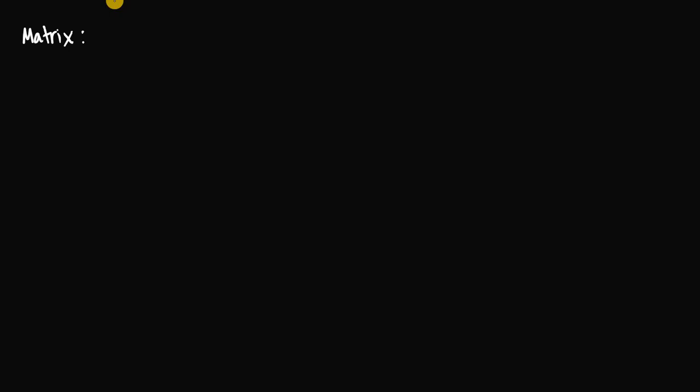Now that we've had a first look at matrices, let's get into the formal definition of a matrix. A matrix is simply a rectangular array of numbers. These numbers are sometimes called entries or elements — you can refer to them as either.